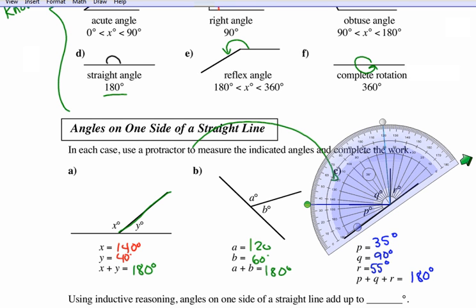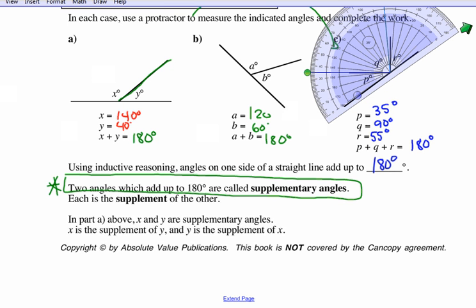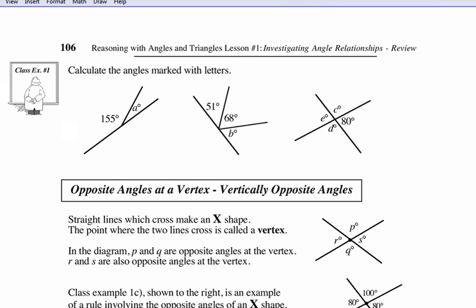When two angles add to 180, that's called supplementary. Know that term. If they add to 90, that's complementary. Supplementary means adding to 180 — put it on your study sheet. Using that property, to find angle a we take 180 minus the other angle, which gives us 25 degrees.